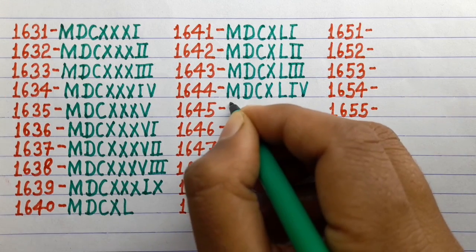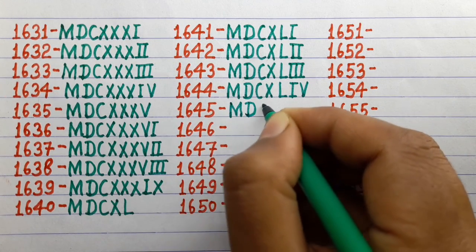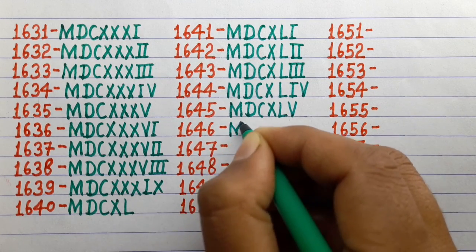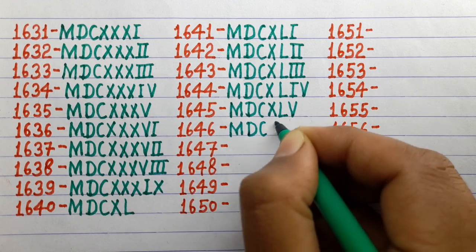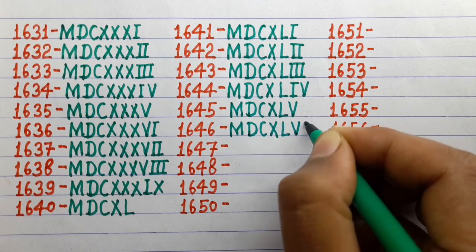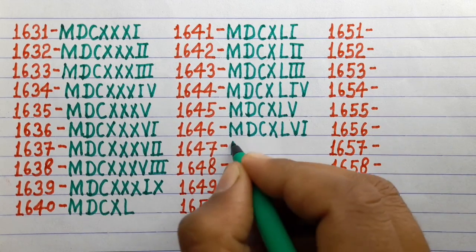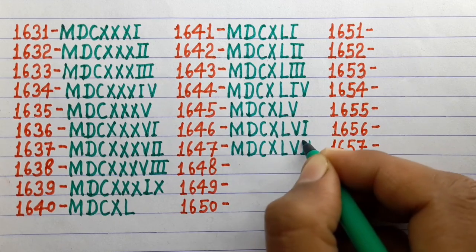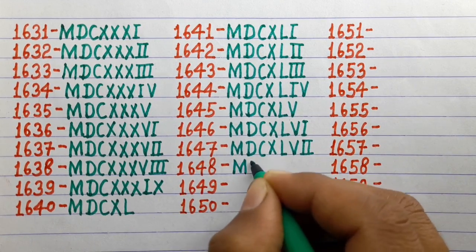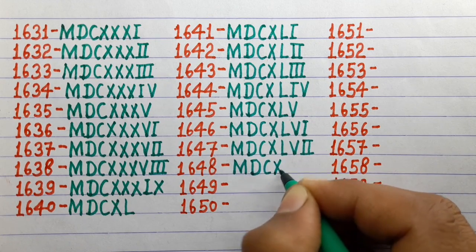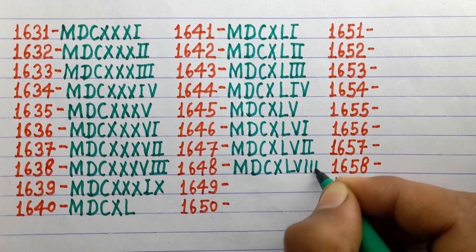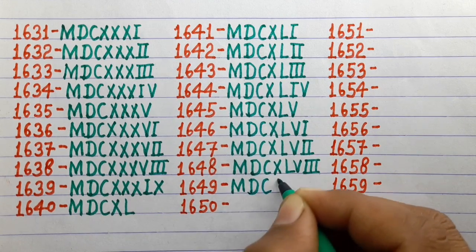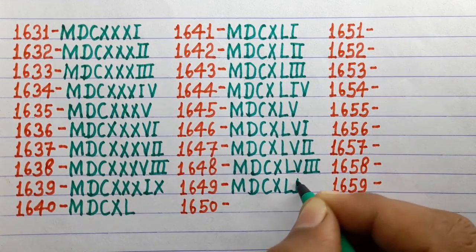1641 MDCXLI, 1642 MDCXLII, 1643 MDCXLIII, 1644 MDCXLIV, 1645 MDCXLV, 1646 MDCXLVI, 1647 MDCXLVII, 1648 MDCXLVIII, 1649 MDCXLIX.